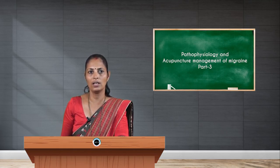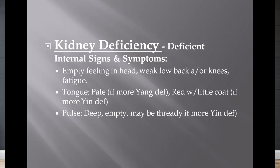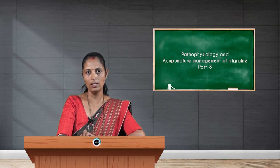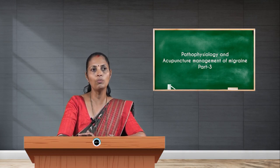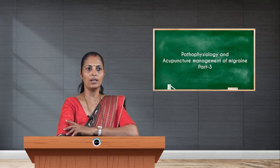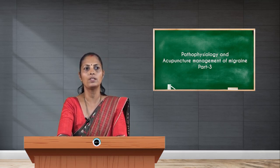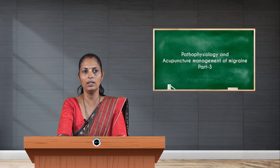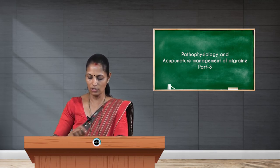Kidney deficiency: symptoms are an empty feeling in the head, weak low back or knees, associated fatigue. The tongue may look pale red or with little or no coat; pulse may be deep, empty, and thready if the yin is more deficient. Treatment: Kidney 3, CV 4, GV 20, Stomach 36, and UB 23.